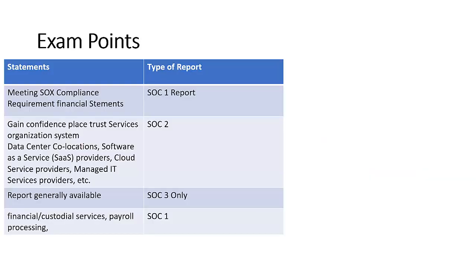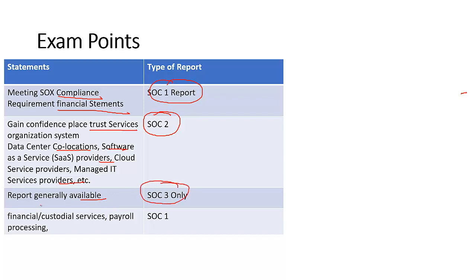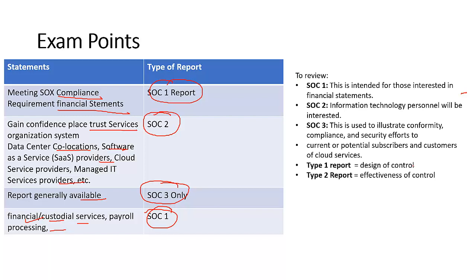Exam summary: If the question mentions meeting a US-specific compliance requirement, obtain the SOC 1 report. If the question mentions financial statements, custodial services, or payroll, the answer is SOC 1. If it mentions trust services, data centers, software, or cloud service providers, ask for SOC 2. If it's generally available on a public website accessible to everyone, it's SOC 3. Type 1 talks about design of a control; Type 2 talks about effectiveness of a control. SOC 1 and SOC 2 both have Type 1 and Type 2 reports. That's all from my side — my name is Prab Nair, follow me on LinkedIn.